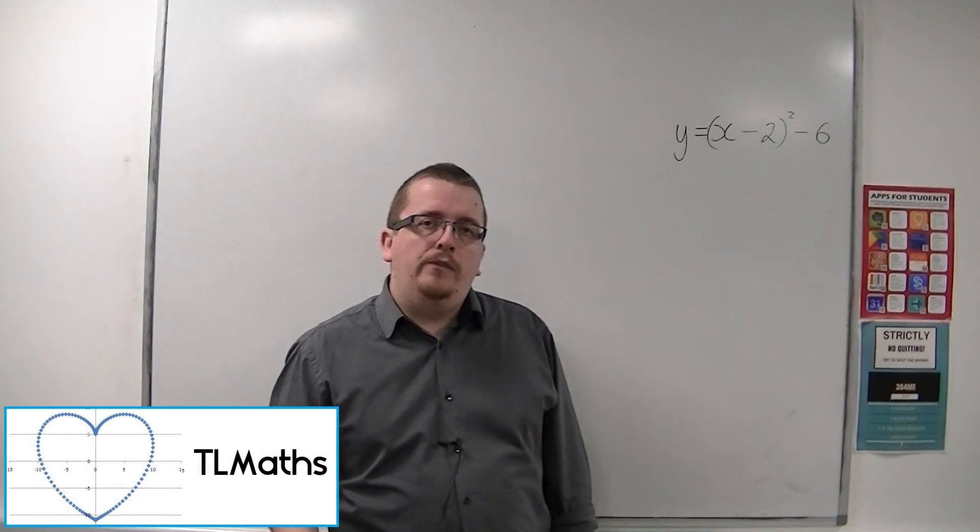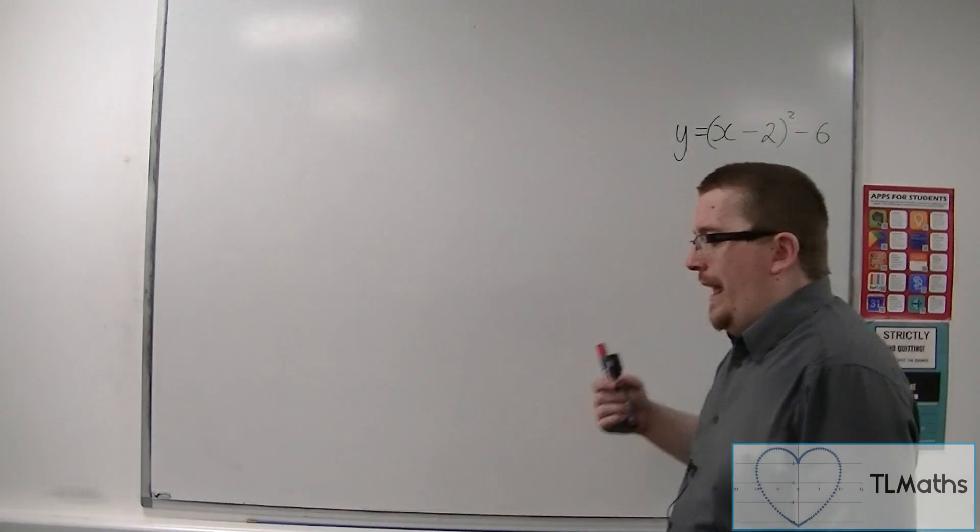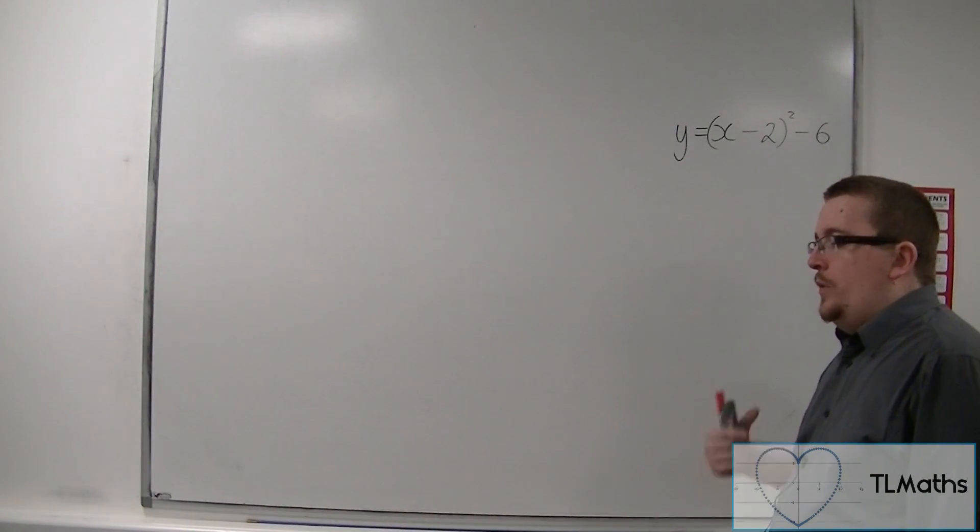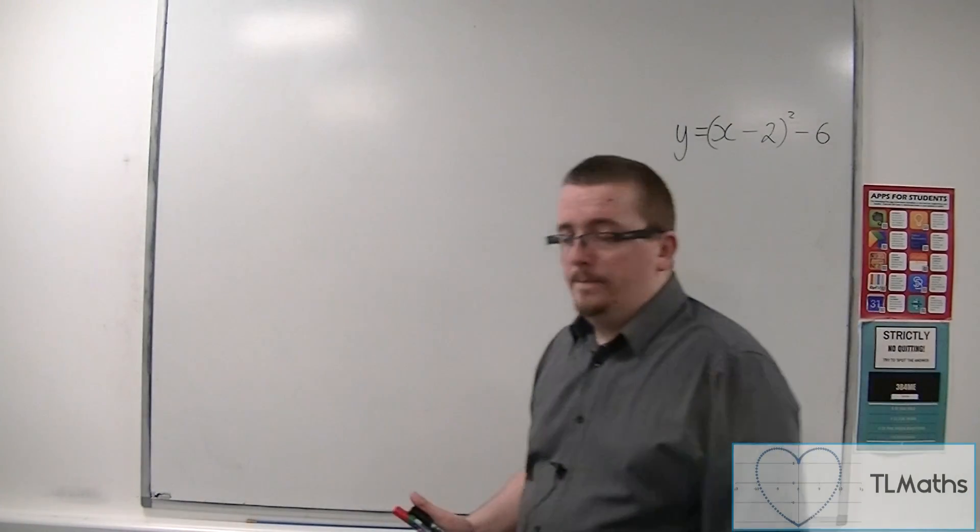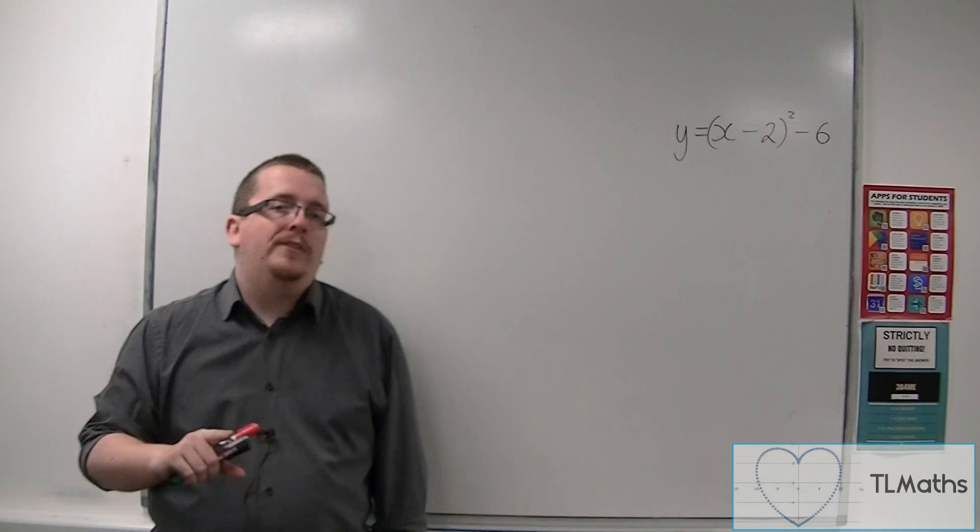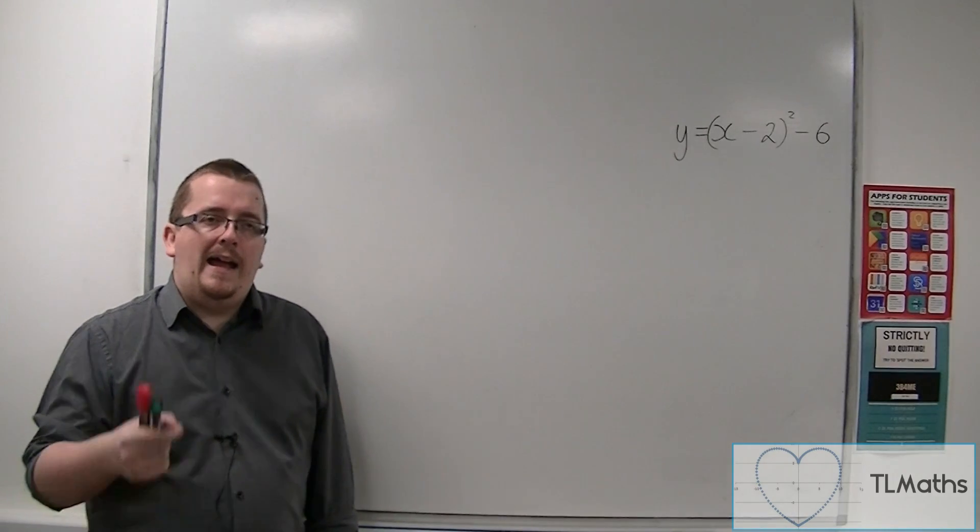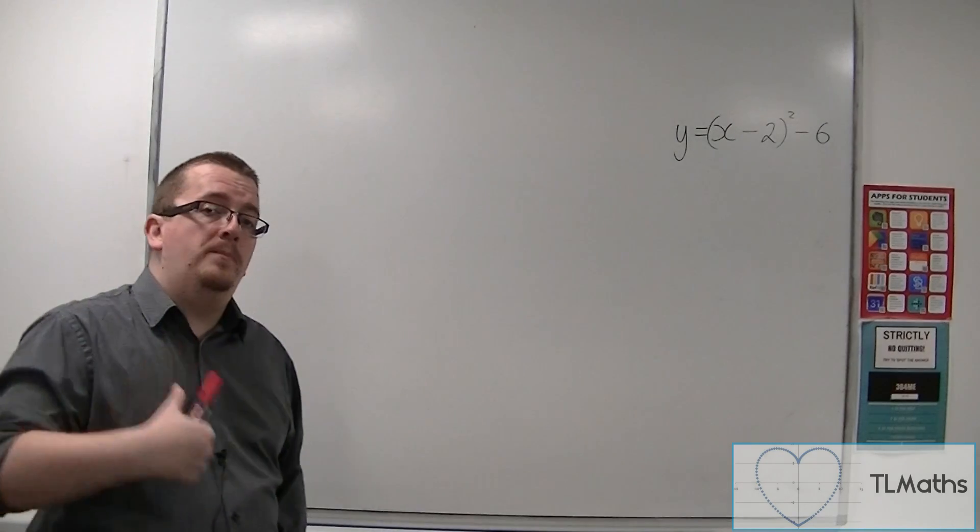We've reminded ourselves of how to complete the square. In doing that, we've been able to identify the vertex of a parabola. Now what we want to do is introduce translations formally. And the best way to do that is to do so first by an example.